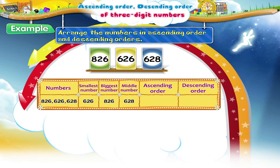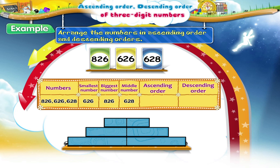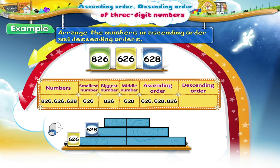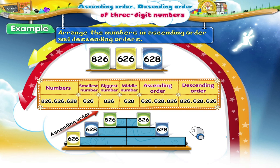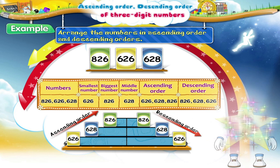Now, place the stickers in the ascending order and the descending order. Starting from the smallest number, the ascending order will be 626, 628, and 826. Starting from the biggest number, the descending order will be 826, 628, and 626. Good job, Starry!